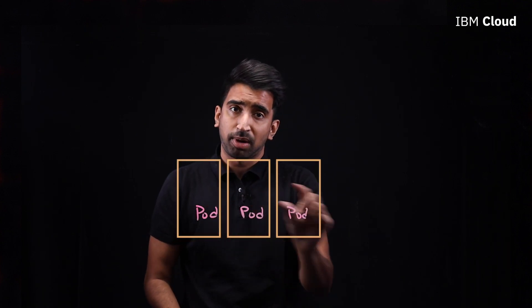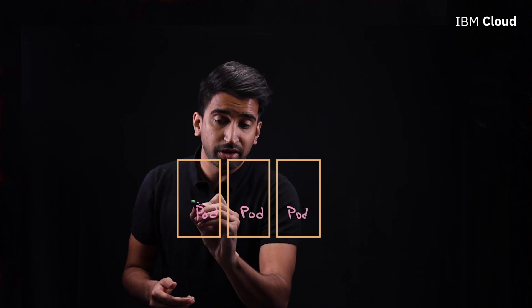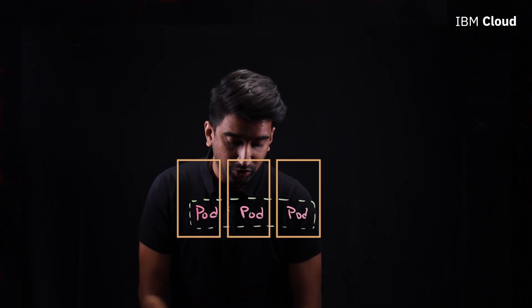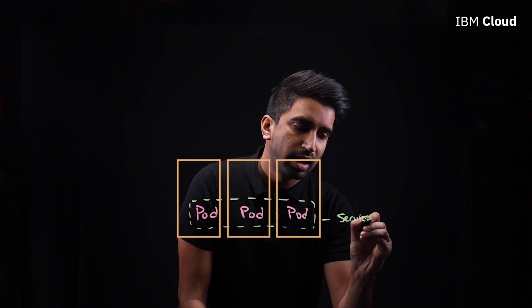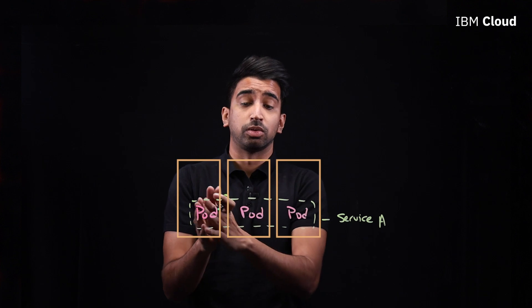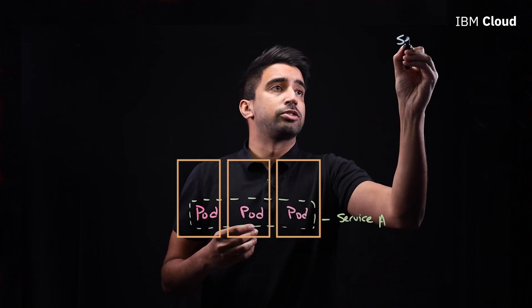Let's assume that we've got a pod scaled out three times within my Kubernetes cluster and I've got three nodes in my Kubernetes cluster, and this pod is scaled up to three. Now these pods together — let's say I've created a grouping with a label selector to create what's called a service. A service basically enables me to load balance requests to one of these pods.